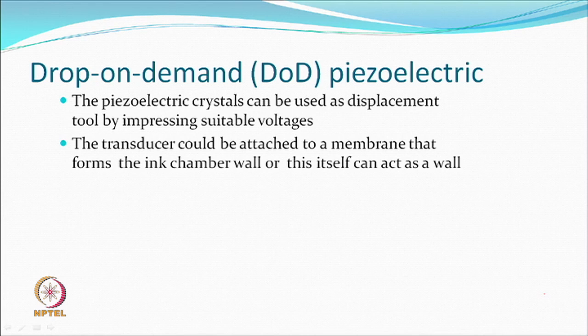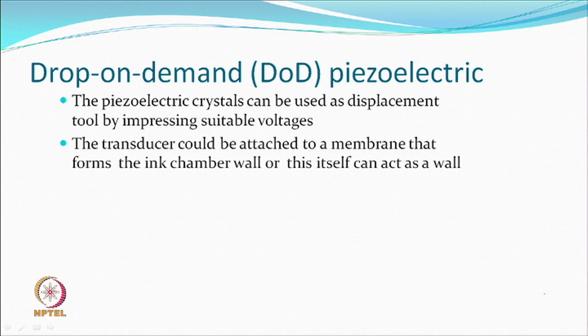The transducer can be attached to a membrane that forms the ink chamber wall. The ink chamber wall is made of some flexible membrane. On top, on the side, or at the bottom, if you add a piezoelectric crystal and apply a suitable voltage, you will get displacement and that volume could be ejected out. Sometimes the sensor itself may act as a wall, which is possible as long as the ink chemistry does not destroy the sensor material.